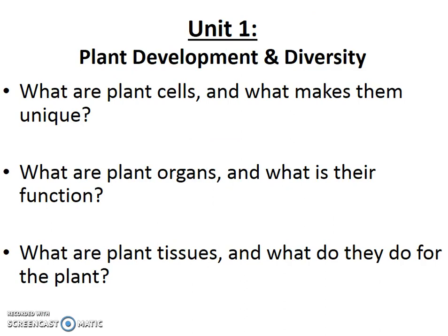So, plant cells — vacuoles, chloroplasts, and cell walls — is what makes them unique. Put those cells together and you get roots, stems, and leaves. Roots absorb and store water and nutrients, stems support the plant, and leaves help with photosynthesis. Roots, stems, and leaves all have dermal tissue, vascular tissue, and ground tissue. Dermal tissue is always on the outside and always protects. Vascular tissue always moves water and nutrients. But ground tissue changes depending on the organ: in the leaves it helps with photosynthesis, in the roots it helps absorb and store water and nutrients, and in the stems it helps support the leaves. Alright, thanks for listening — that's it.